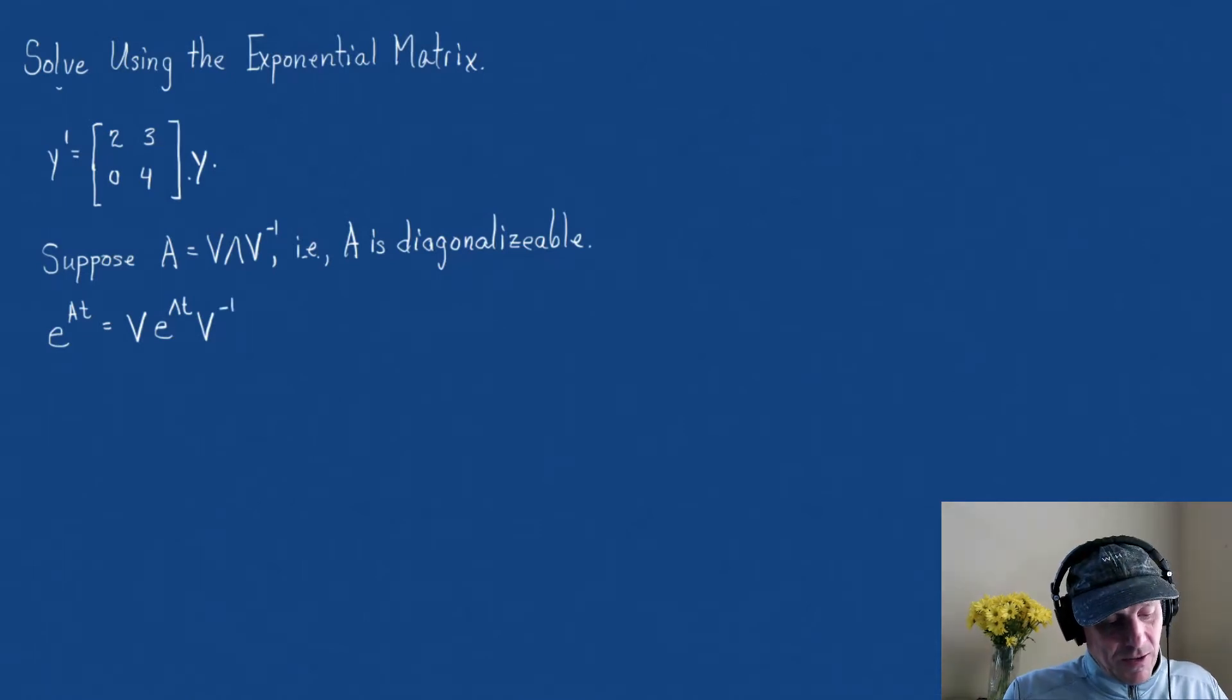And we said that E to the lambda T, the lambda, that E to the lambda T is the diagonal matrix of E to the lambda 1 T, all the way down to the E lambda N T. That's what that is. And those are zeros everywhere else. Well, let's see if we can do that.